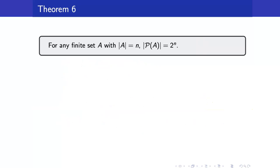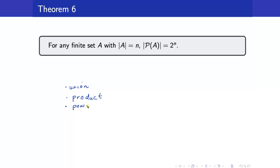For our last result, for any finite set A with cardinality n, the cardinality of the power set of A is equal to 2 raised to the n. What we have seen in this lesson is that whenever you construct new sets from finite sets — whether you get the union of two finite sets, the Cartesian product, or the power set of a finite set — the result will again be finite.